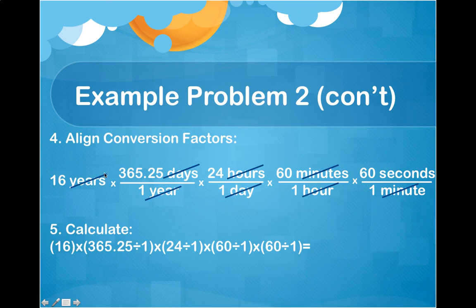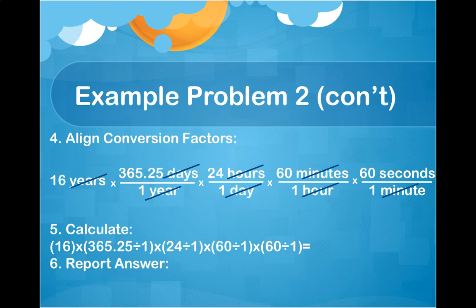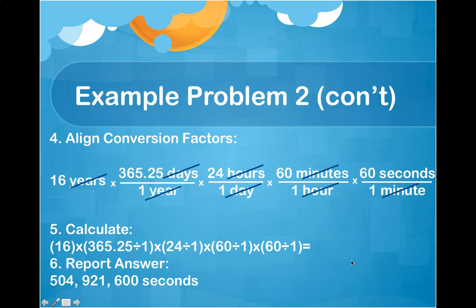Now we put this in the calculator. Remember to use parentheses for the conversion factors. A common mistake is to use the fraction key rather than the divided-by key; in chemistry it's always better to use the divided-by key. Our calculator gives us 504,921,600 — and make sure you include the unit: seconds. The next thing we'll talk about is significant figures and calculations, because we need to determine how many of these digits we actually report.